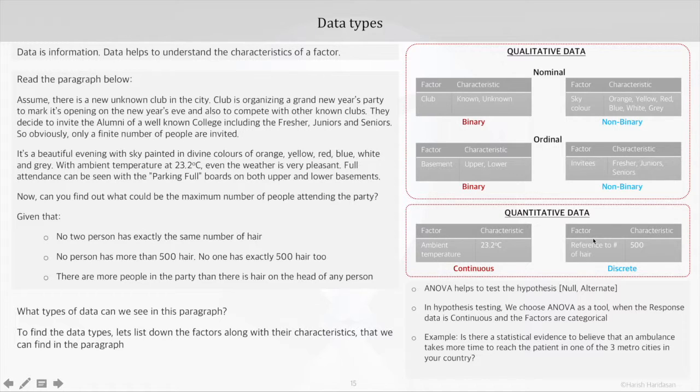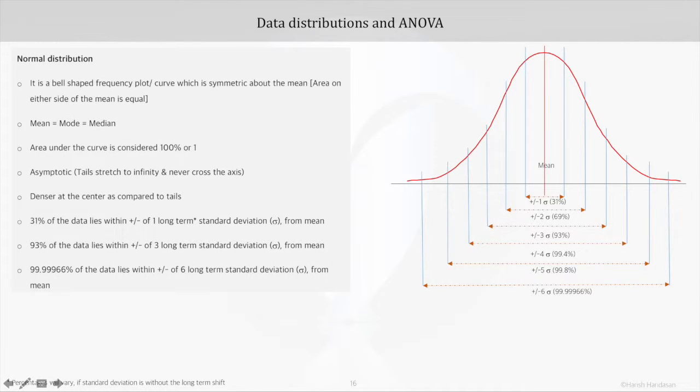The next pit stop is the distributions. First comes normal distribution. This has been adequately explained in part 4 of our tutorial on understanding the sigma level, so here we will just touch upon the key aspects. Normal distribution is a bell-shaped frequency curve that's symmetric about the mean, which means the area on either side of the mean is equal. In such a case, obviously the mean, median, and mode would be equal.